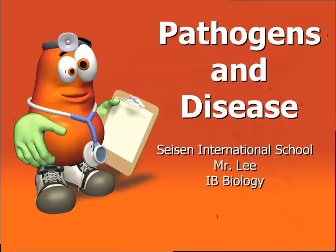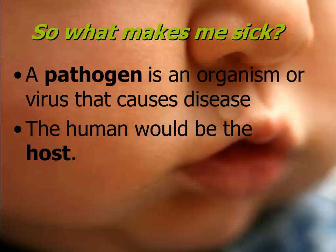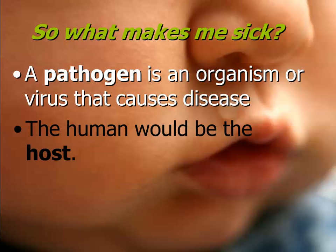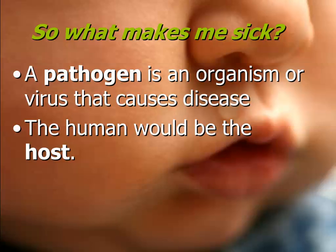You might have learned about some other diseases in your other classes. We're looking at pathogens and diseases. A pathogen is an organism or a virus that causes disease. Remember, a virus is not considered alive because it doesn't have cells. A pathogen can be an organism — it could be an animal, bacteria, protists, or a virus. It can also be a protein, as in mad cow disease, which is caused by a prion — a type of protein. The host would be the thing that the pathogen is invading, so in the case of a human, the human is the host.